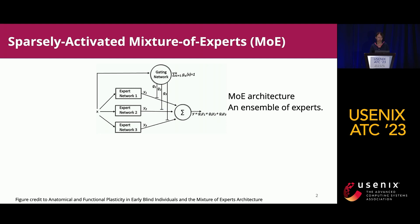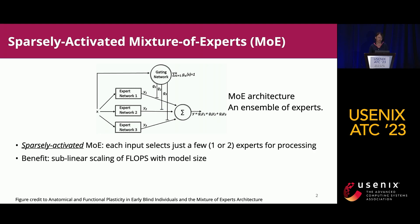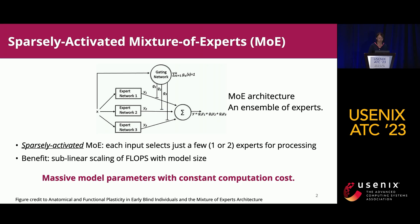MOE is an ensemble model paradigm comprised of several experts and a gating network assigning weights of each expert output. In the sparsely activated MOE, each input selects only a few experts for processing instead of computing over the complete graph. The benefit of sparsity is that the computation FLOPs remain constant even when we increase the number of experts, allowing us to create very large models with massive parameters but very low computation cost.